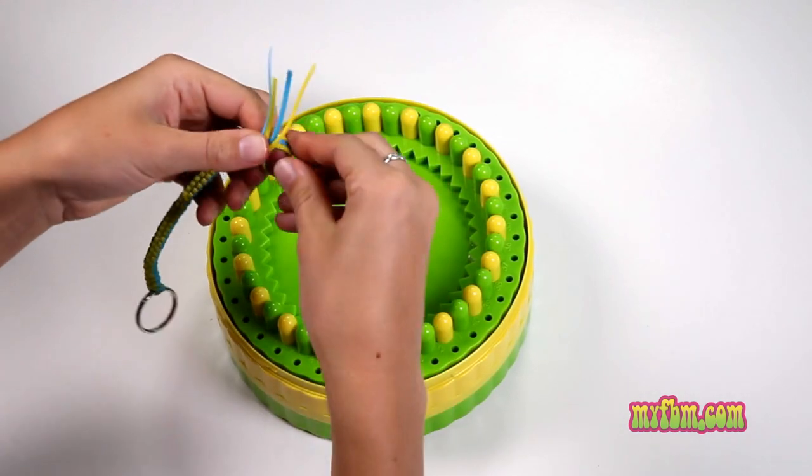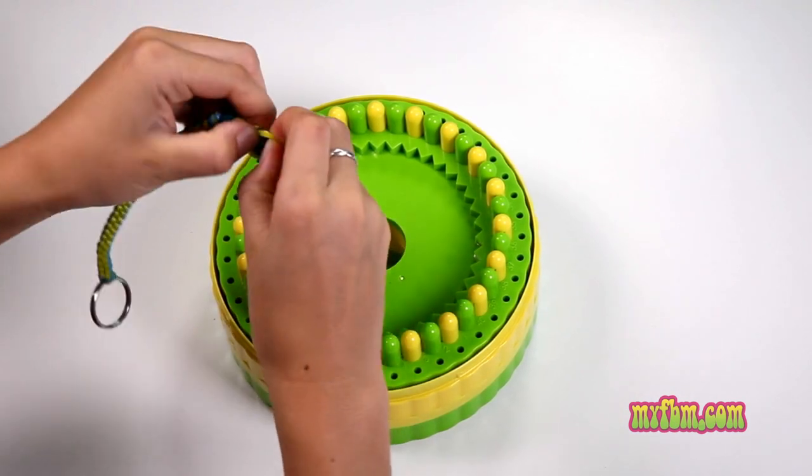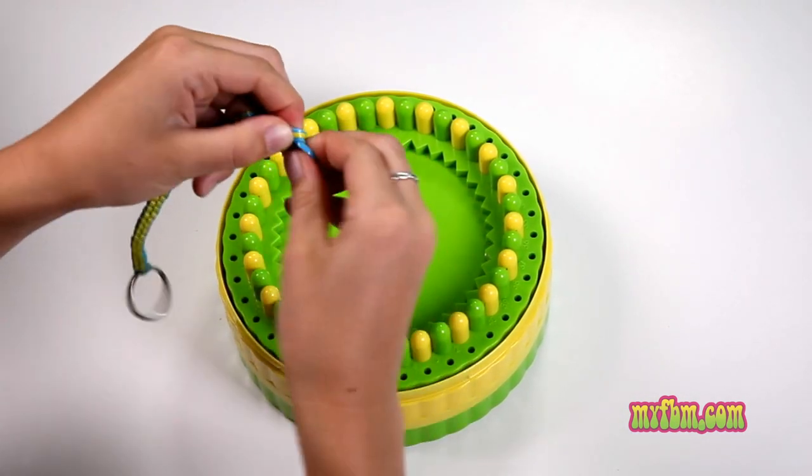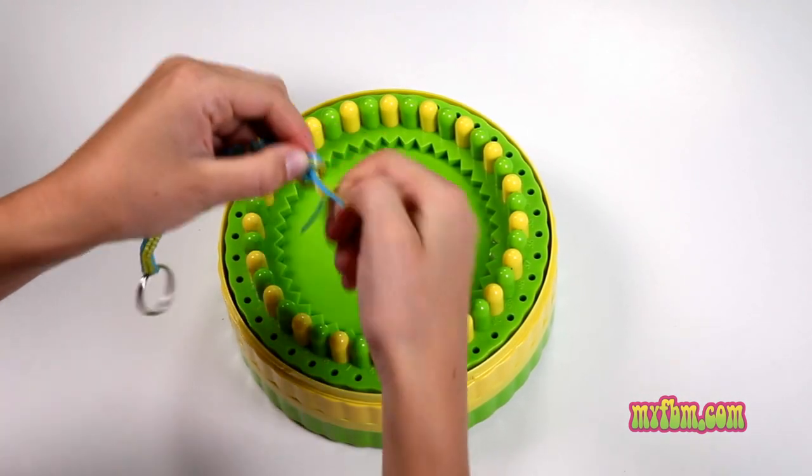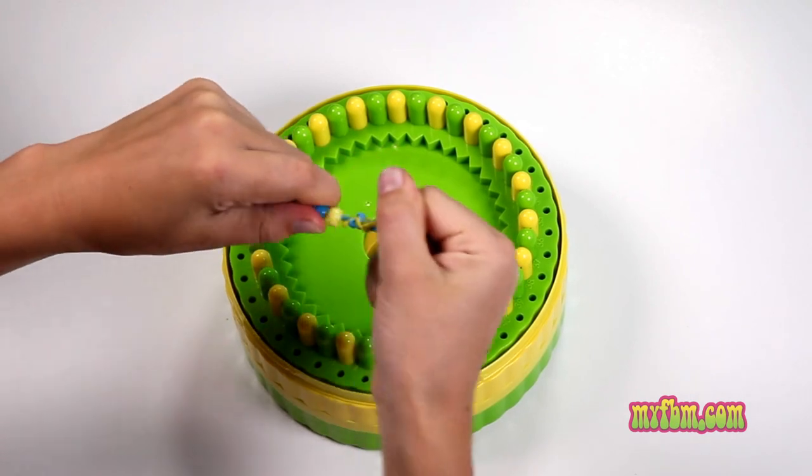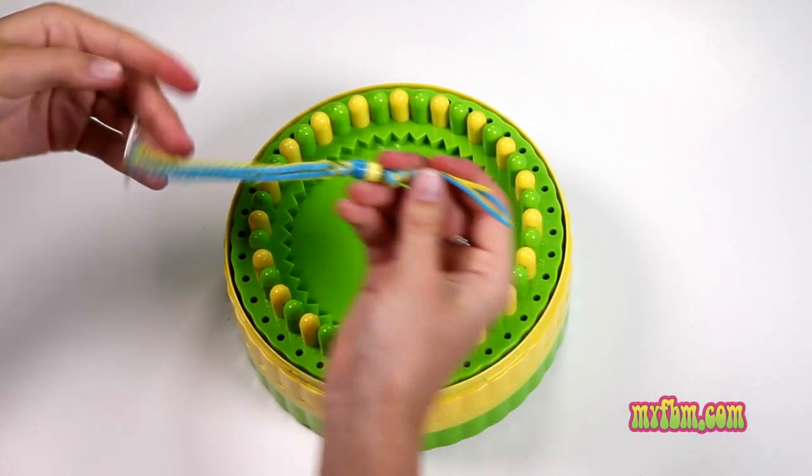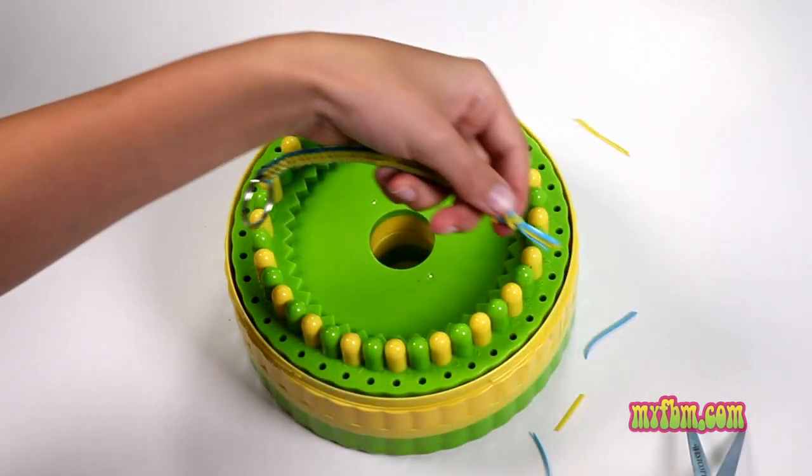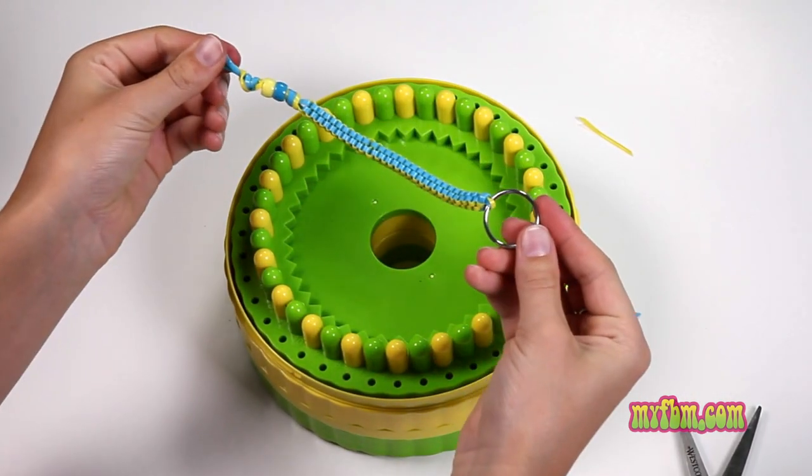You can then tie another knot at the end of your beads, just to make sure they stay on. Pull it nice and tight, and then if you want, you can even cut the ends a little bit shorter. And now you're ready.